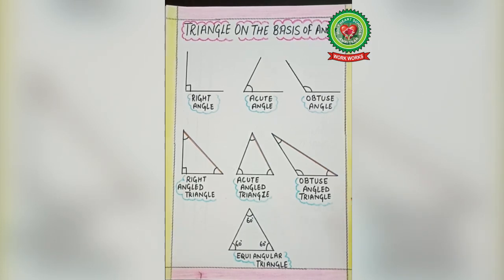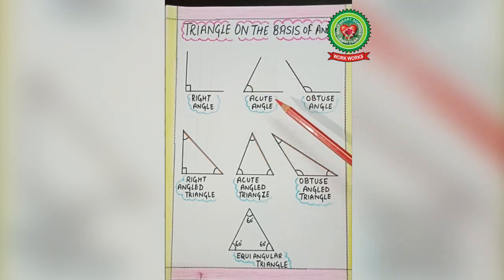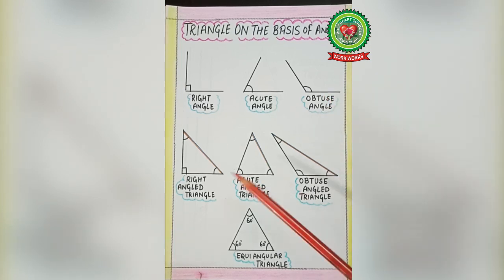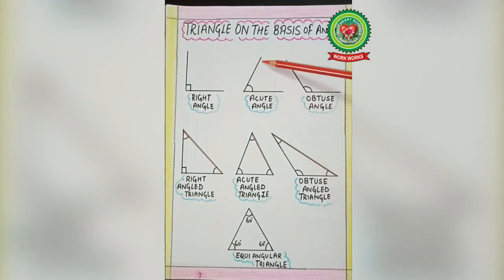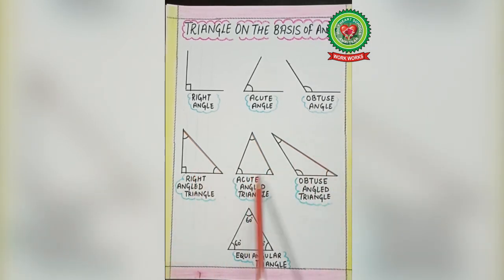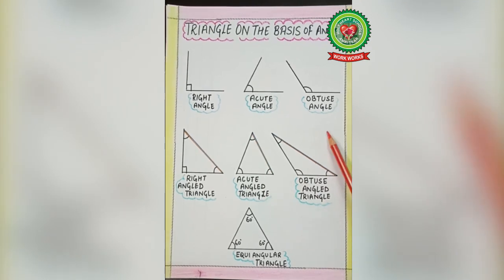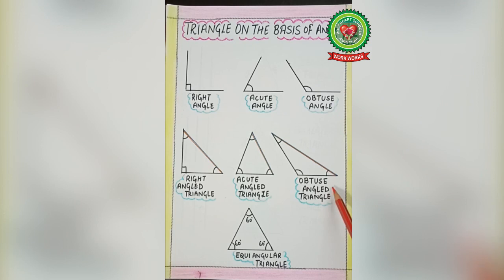Let's classify triangles by their angles. Since there are three types of angles — right angle, acute angle, and obtuse angle — if we use a third line to form a triangle from each, we get three kinds of triangles: right-angled triangle, acute-angled triangle, and obtuse-angled triangle.